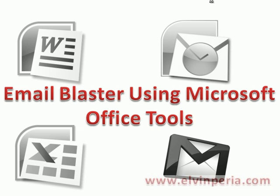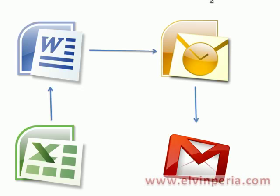To give you an overview, here's what's going to happen. Microsoft Word will transfer the message body as well as the unique information coming from Microsoft Excel, then merge it and send it to Microsoft Outlook, and then Microsoft Outlook will send it using our Gmail account.